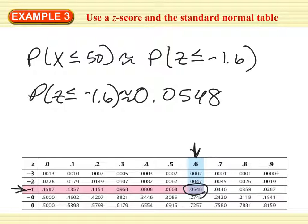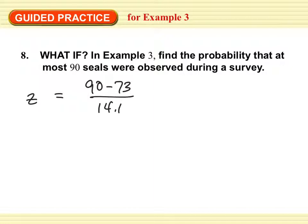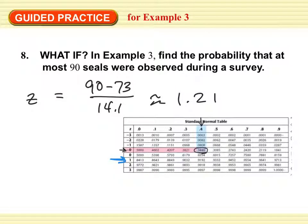So the probability that at most 50 seals were observed during a survey is 0.0548. Now, what if you find the probability that at most 90 seals were observed? We calculate the z-score again: 90 minus 73 over 14.1 gives us approximately 1.21. Looking for positive 1.2 in the table, 0.8849 is going to be our probability.